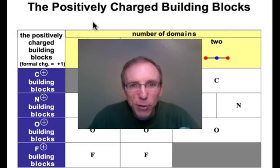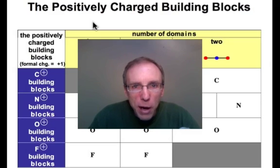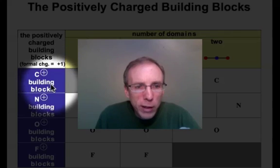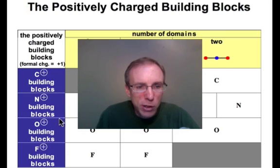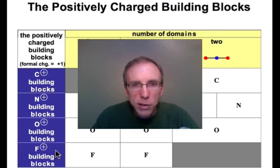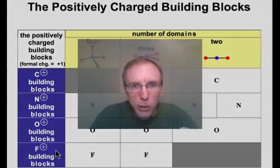Okay, we've just about finished the tables. The positively charged building blocks are all that remain. I'm gonna ask that you do this table on your own, except I'll ask that you wait on the positively charged carbon building block. That row is going to be an exception to the octet rule, and we're gonna talk about that in the next webcast. So, go ahead and do nitrogen, oxygen, and fluorine positively charged. Pause your QuickTime player, and we'll come back and take a look.